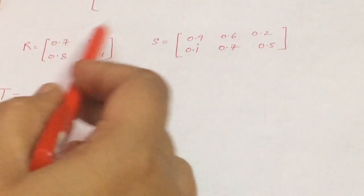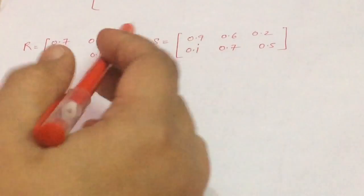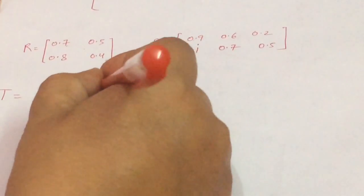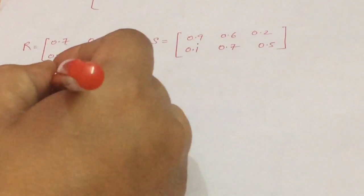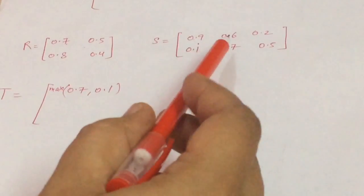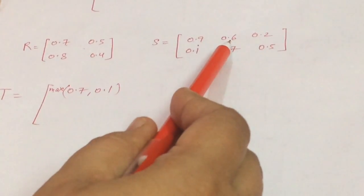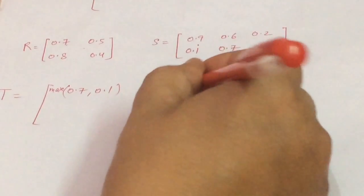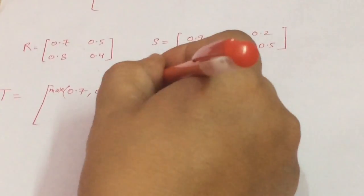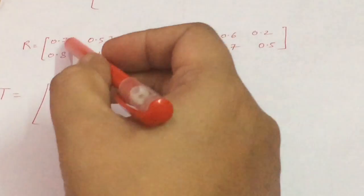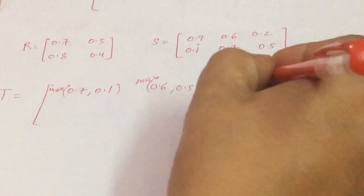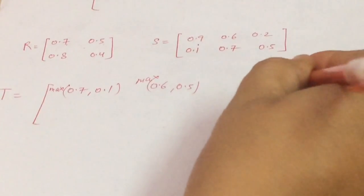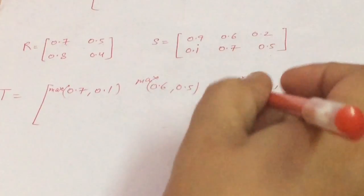For the first row, first element: minimum of 0.7 and 0.9 is 0.7, and minimum of 0.5 and 0.1 is 0.1. Then we find the maximum of those. For the first row, second element: minimum of 0.7 and 0.6 is 0.6, and minimum of 0.5 and 0.7 is 0.5. For the first row, third element: minimum of 0.7 and 0.2 is 0.2, and minimum of 0.5 and 0.5 is 0.5. Then we take the maximum of each pair.